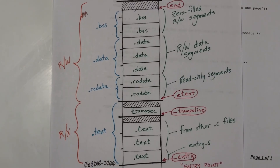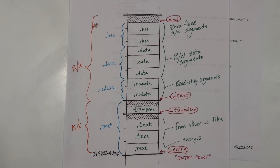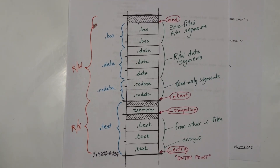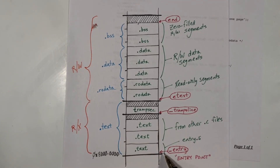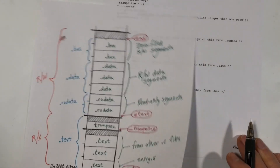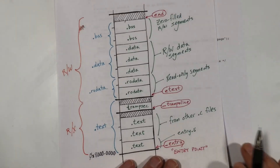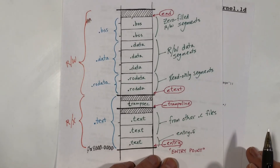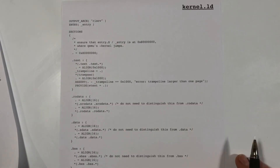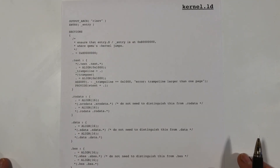So that's it for the linker. If you didn't understand all that, don't worry about it — I think you can understand the kernel in isolation from understanding this linker script file. I will see you in the next video.